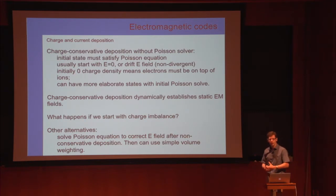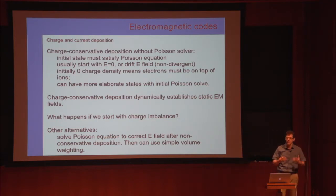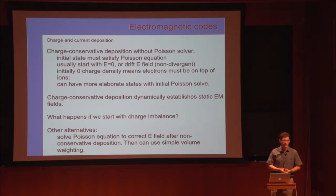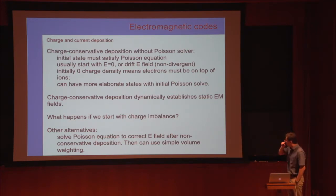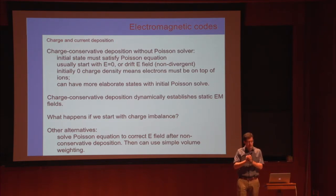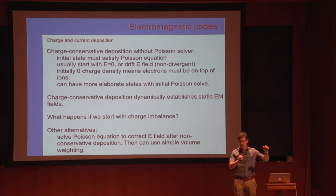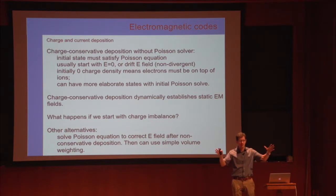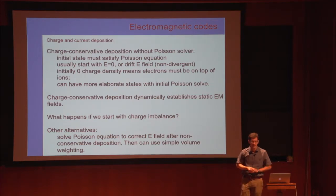This is obviously the most expensive way to solve electrostatics, so if your problem is truly electrostatic, don't do this. But in relativistic problems where the speed of light and particle speeds are comparable, it's not a bad approach. In practice, if I need to start with some charge density, I initialize particles co-located, then move them by hand while solving Maxwell's equations and let them go. The electromagnetic fields get established correctly. You can also invest in a Poisson solver for more elaborate initial states—it's not a big deal if you only need it once.